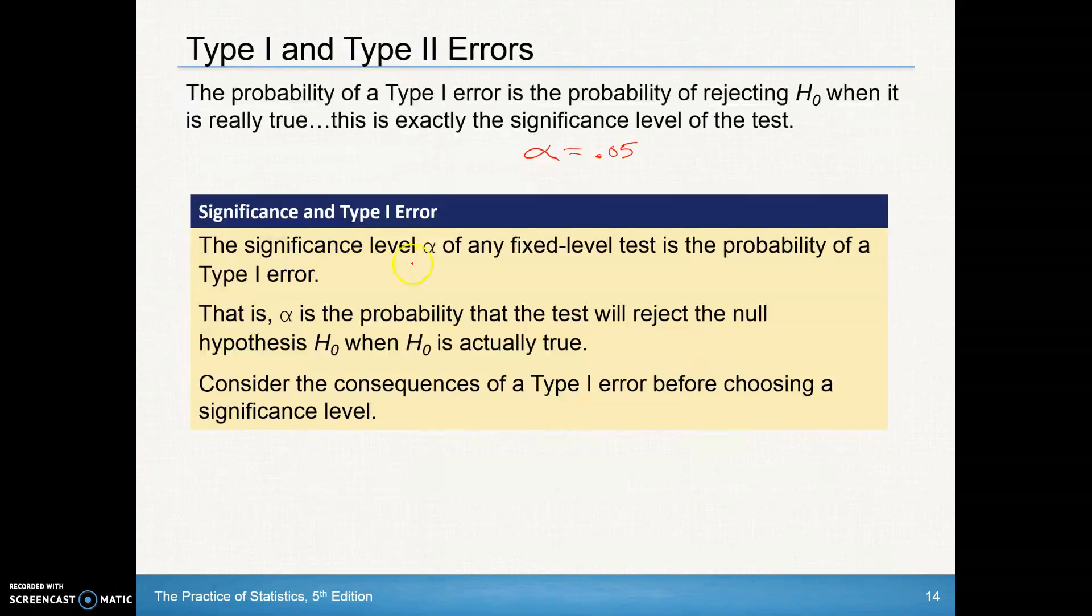So again, that significance level, whatever you set as alpha, is the probability of a type 1 error. In other words, that alpha is the probability, if you set it at 0.05, we've got a 5% probability that the test will reject the null hypothesis when the null hypothesis is actually true.